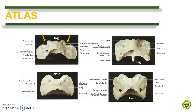In cattle, the transverse foramen is absent. Please note the absence of the said foramen at the wing of the atlas of cattle and compare it with that of the horse. The same is true for the atlas of small ruminants like sheep and goats. Speaking of the horse atlas, all the foramina are present in the horse. This is the same with the pig — the lateral vertebral foramen, transverse foramen, and alar foramen are all present.